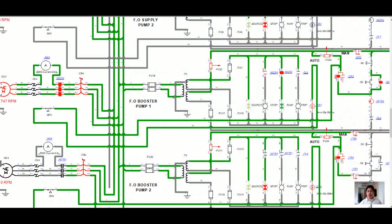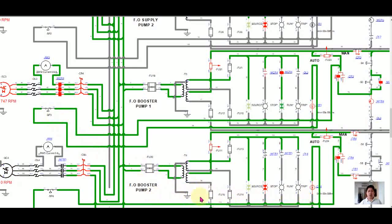One more time to simulate the standby system: I will remove the pressure on number one, and number two automatically starts running. Then I will put back to normal. Number two will automatically switch off since the power is taken from number one. But for number two, since the power is taken from there, you can manually switch it off if you want.